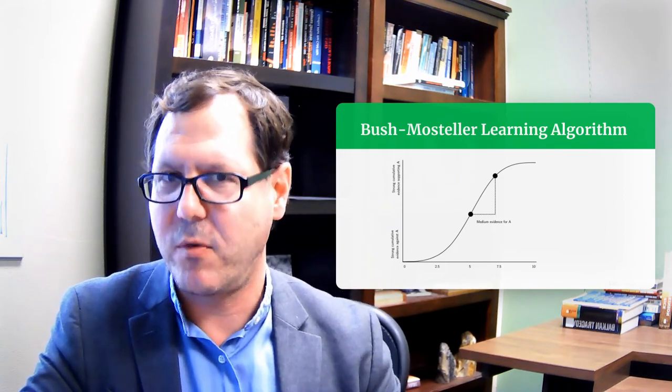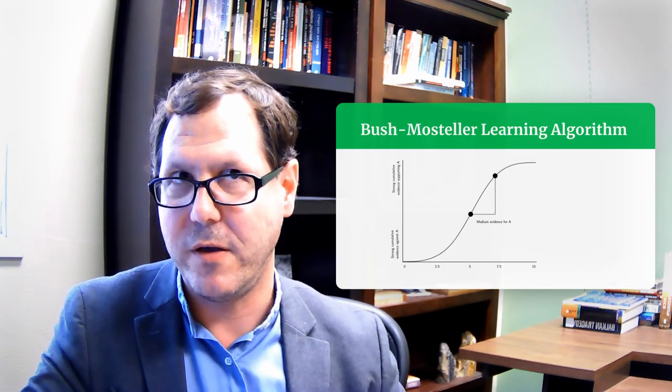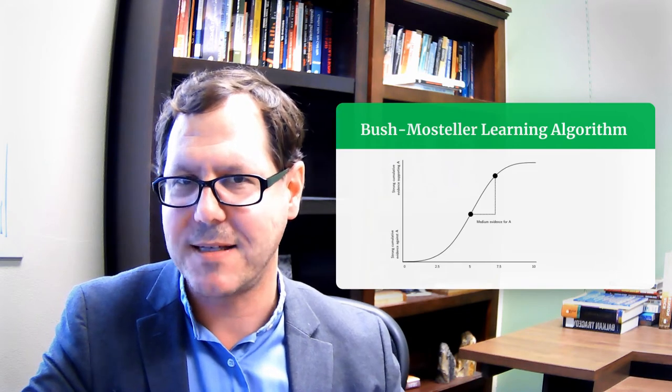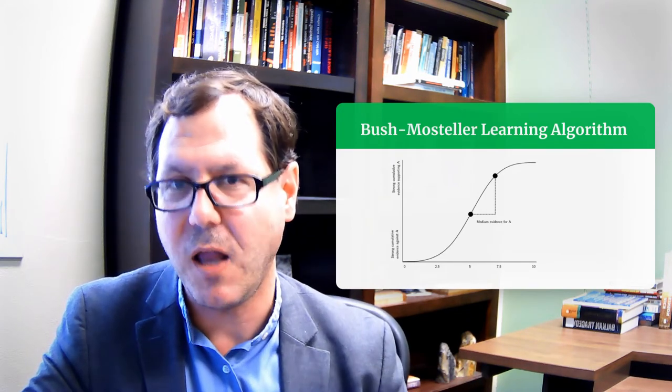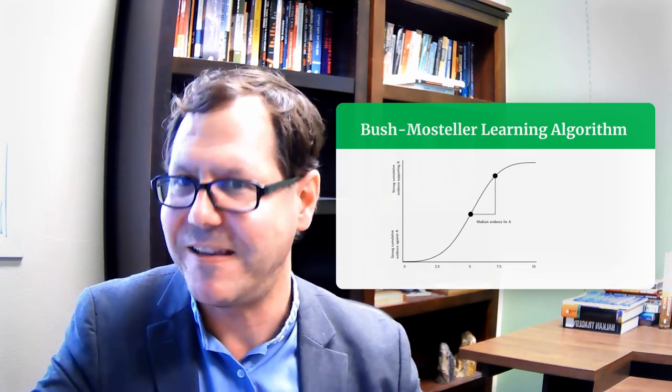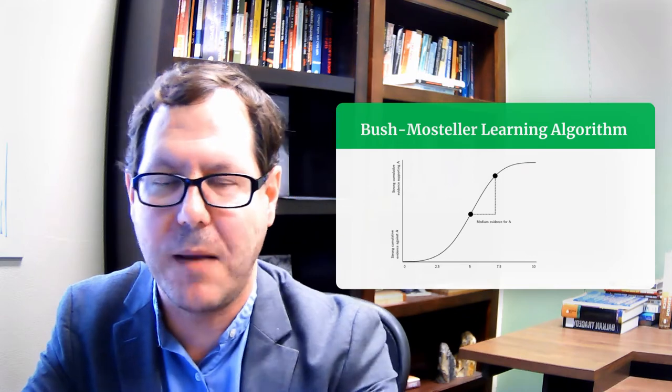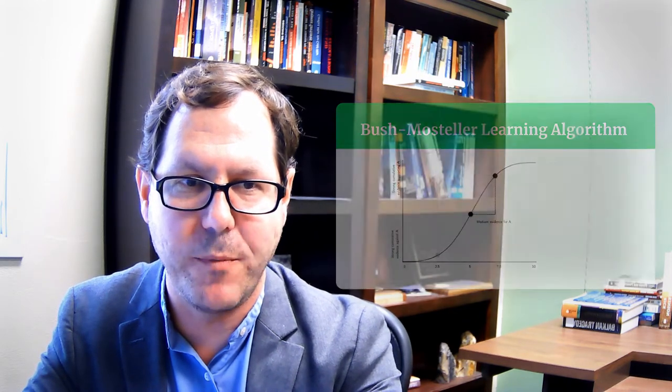But those numbers are expressed in terms of the scale for the X axis. And so if I'm starting with a medium piece of information, I'm going to move 2.5 units over to the right on the X axis, which would move me along the S-curve line up to that new black dot sort of near the top. I've gained confidence in my belief because of that information being added in.